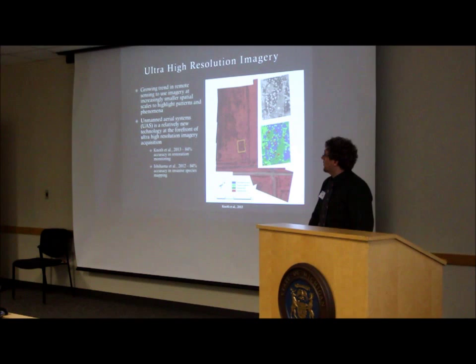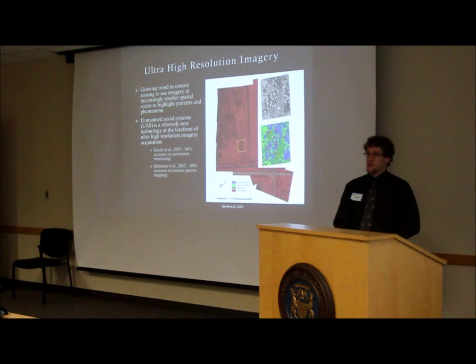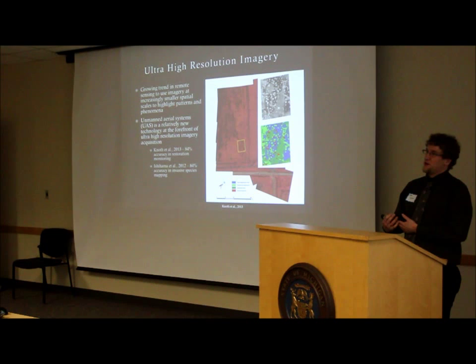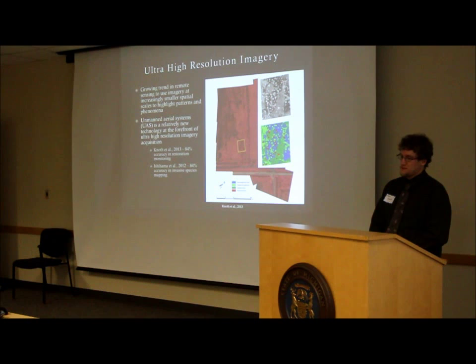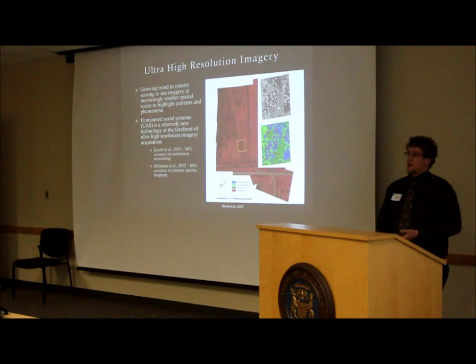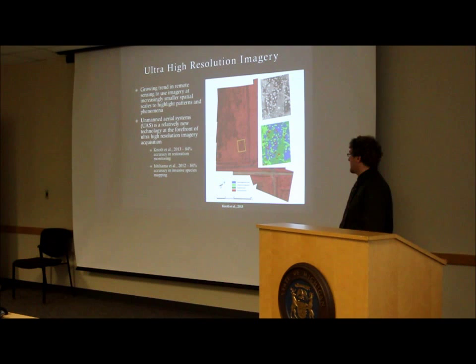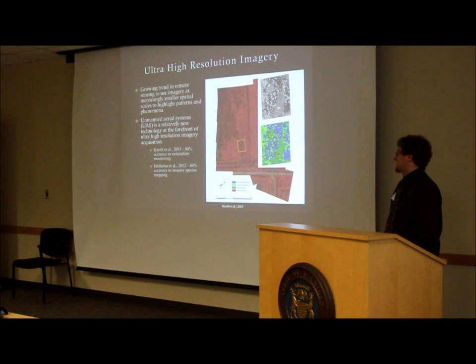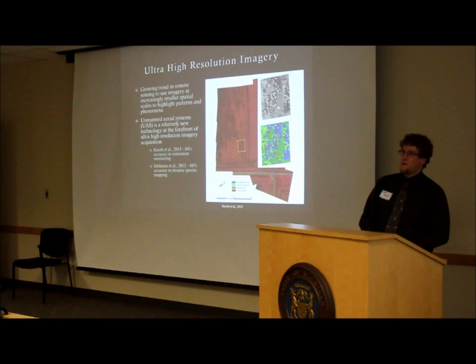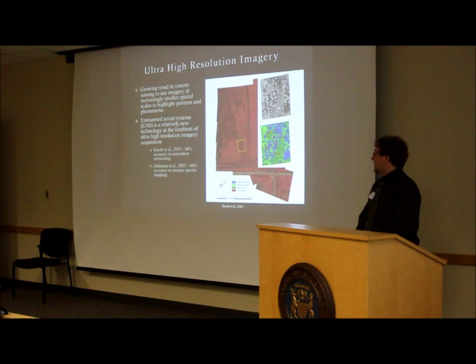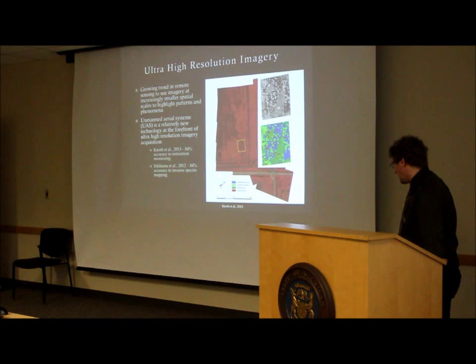There's a growing trend in remote sensing to use smaller and smaller resolution imagery to examine patterns and phenomena, and at the forefront of this is the use of UAVs and unmanned aerial systems. For example, Knopf et al. in 2013 looked at cut-over bog restoration in Saxony, Germany. They used UAS and were able to accurately identify birch encroachment with an accuracy of 84%, which is pretty good for these kinds of studies. And Ishama et al. in 2012 looked at Phragmites invasions in wetlands in Idaho, and were able to map invasive species with an accuracy of 84% as well.